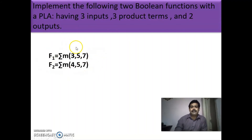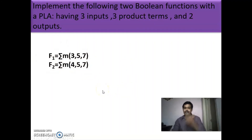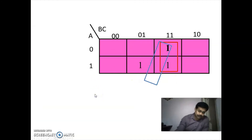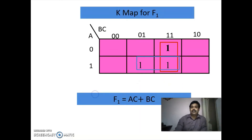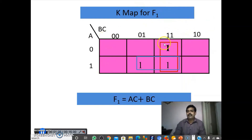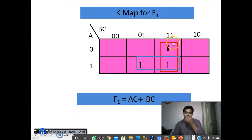The largest number in the two functions is 7, so to represent 7 you need only 3 bits and must draw a three-variable K-map. We plot the minterms for F1 — there are three ones — and group them. The expression for the first group is AC, and for the second group is BC. So by K-map minimization, F1 equals AC plus BC.